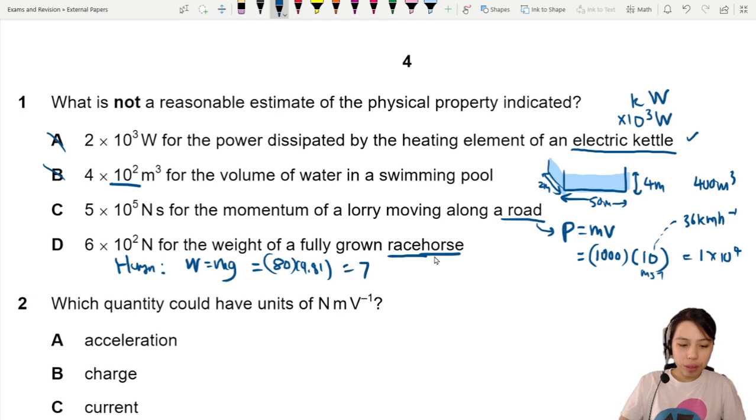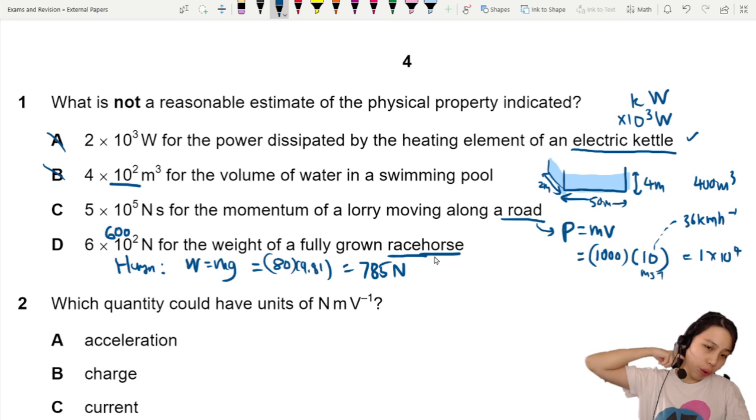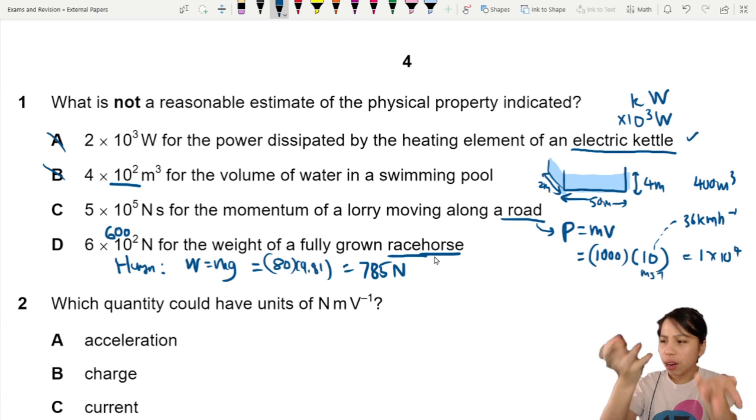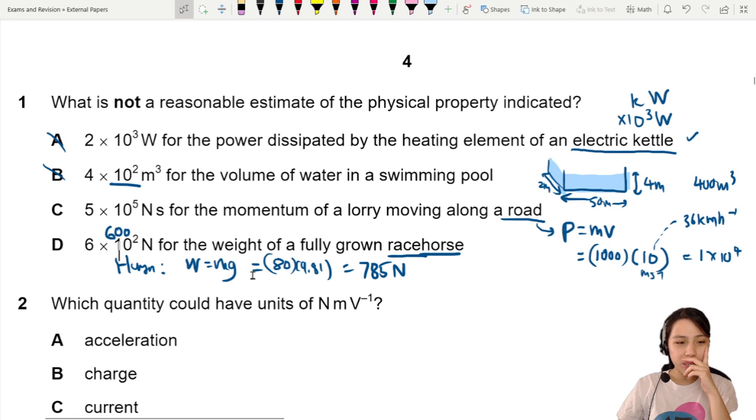So this would be about 785 N. Now here you have a problem. They say 600 N for a horse. Human and horse same weight. No, no, no. Human is much lighter. So this one, the most suspicious one is this. I don't think humans go much heavier than this. So horses cannot be lighter than humans. So I think this is the most suspicious. I will go with D.